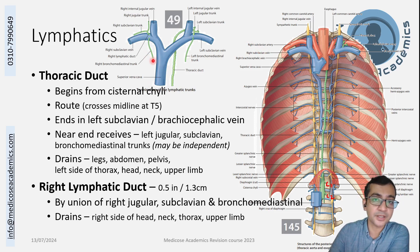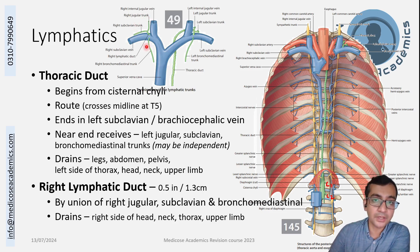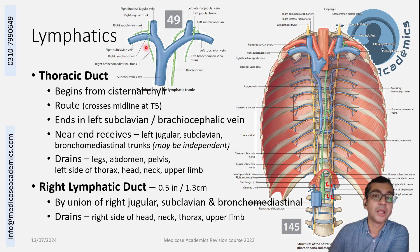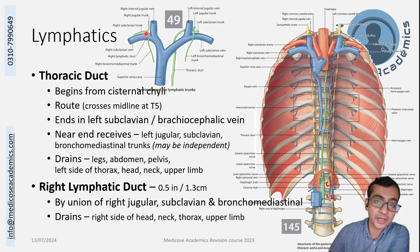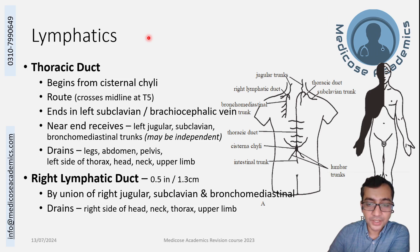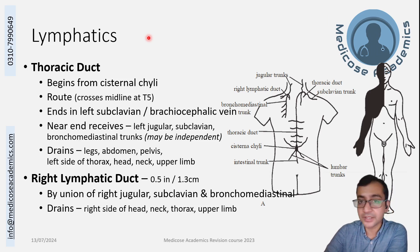On the right side, the corresponding structures are: the right jugular trunk from the head and neck, the right subclavian trunk from the upper limb, and the right bronchomediastinal trunk from the thorax. All three join to form a very small structure — less than half an inch — known as the right lymphatic duct.